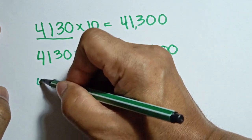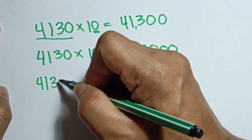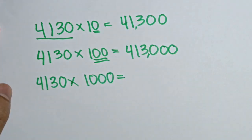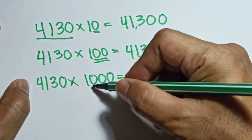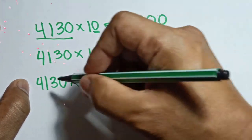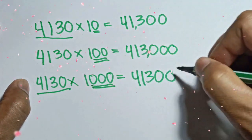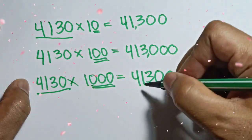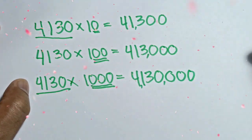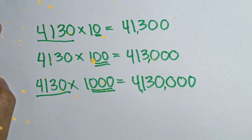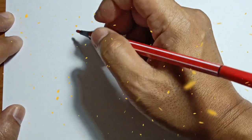Lastly, if you multiply 4,130 by 1,000 — in 1,000 there are three zeros. Copy the given, which is 4,130, and add three more zeros. The answer becomes four million, one hundred thirty thousand. That's the quickest way to multiply numbers by 10, 100, or 1,000.